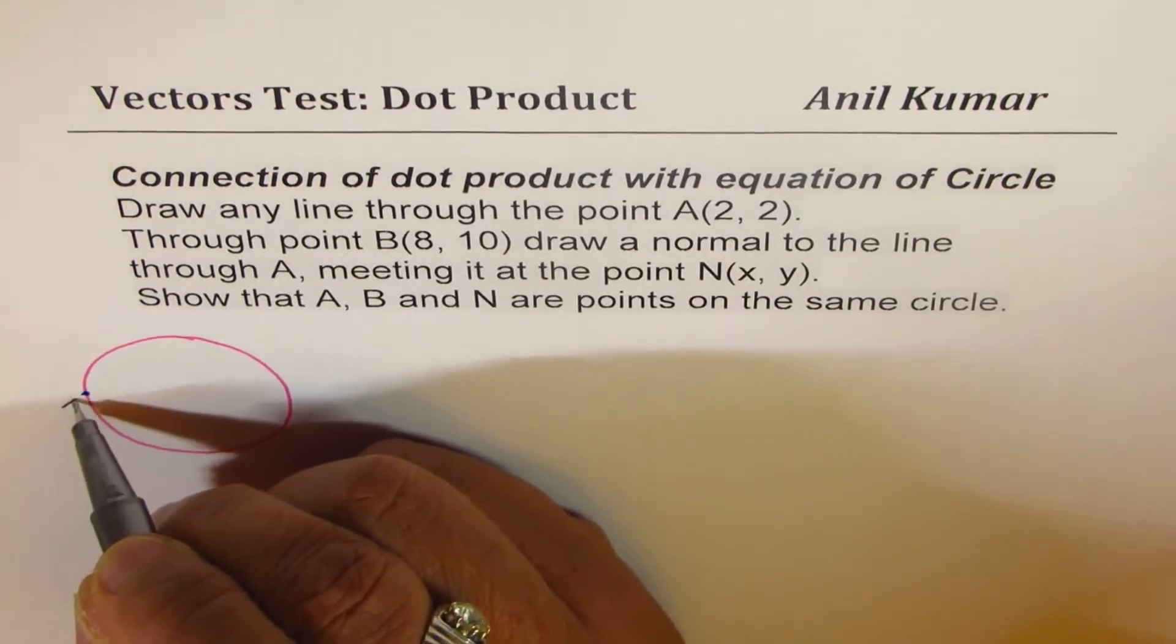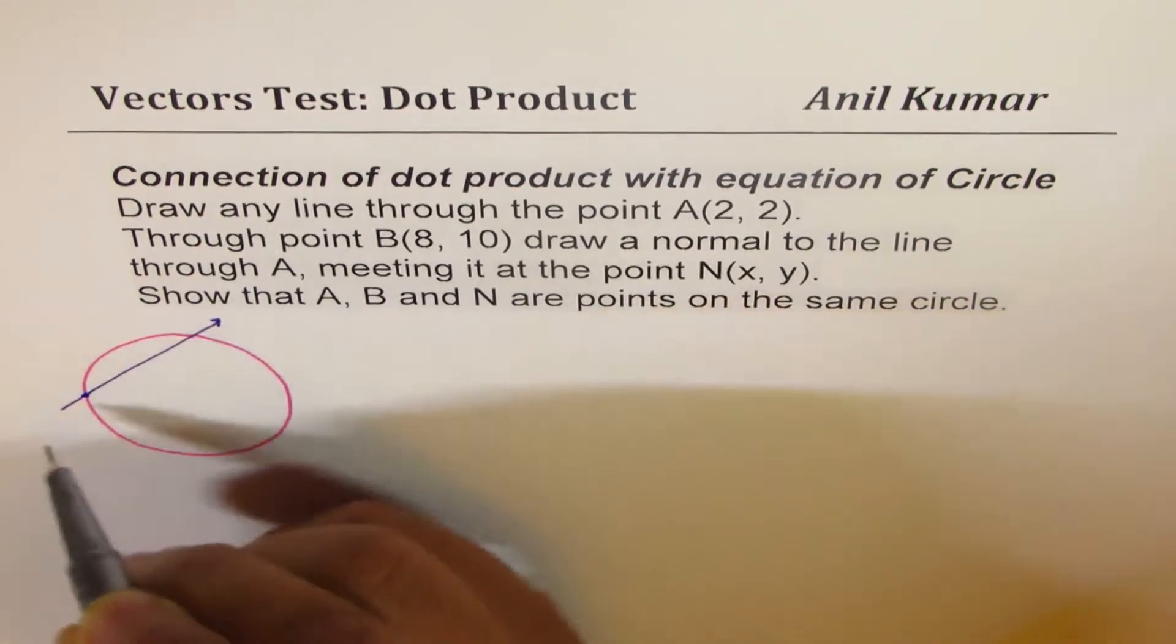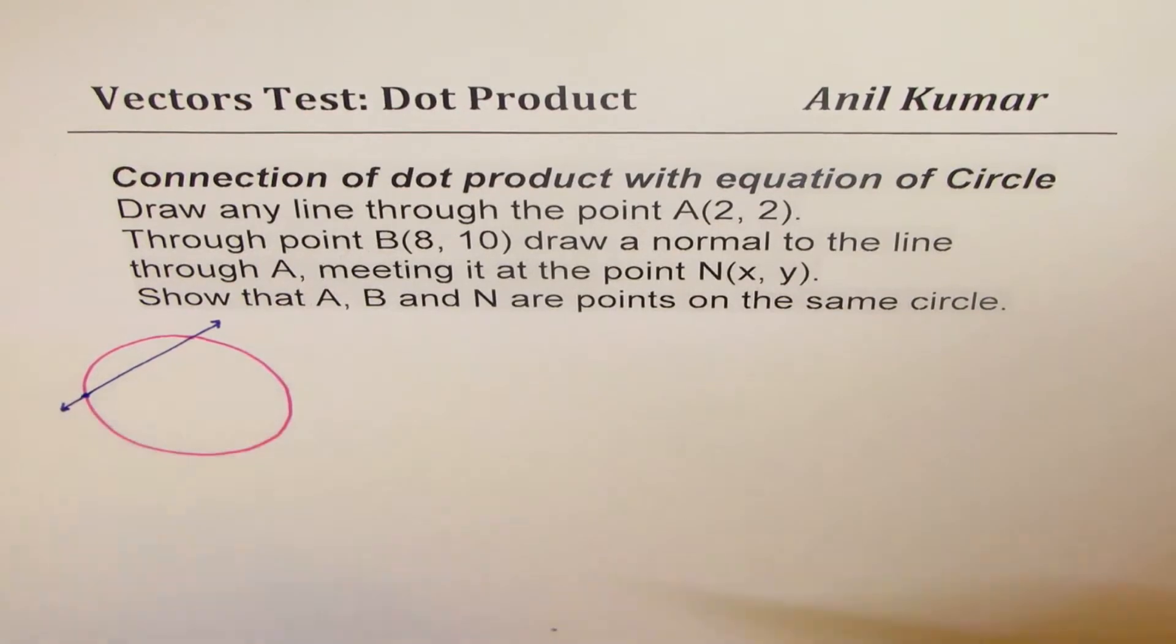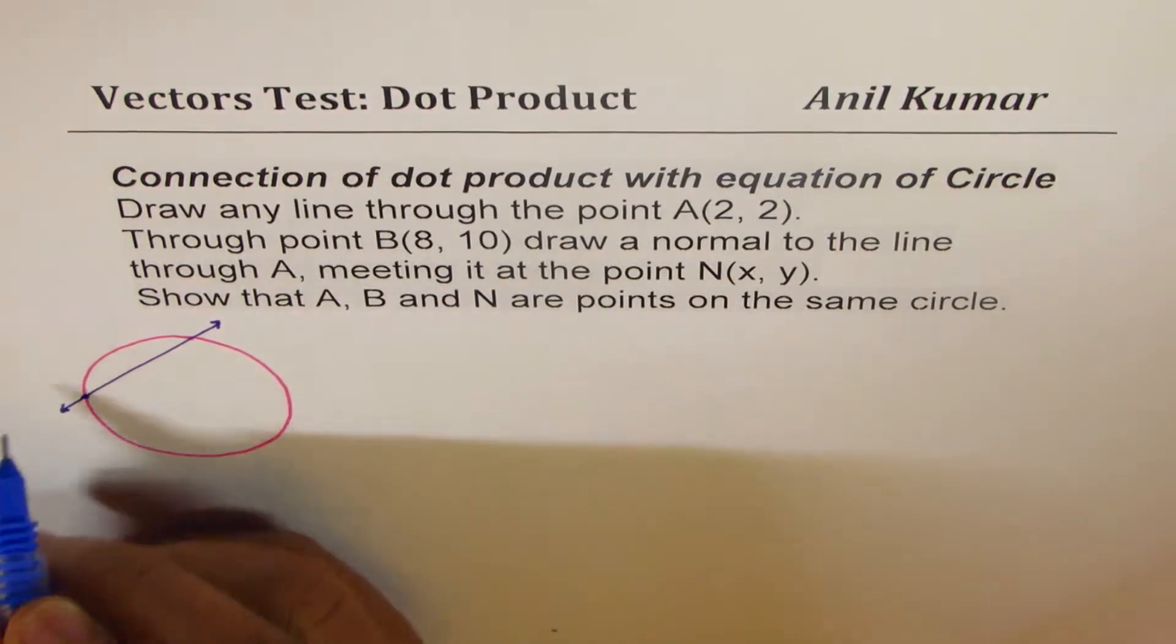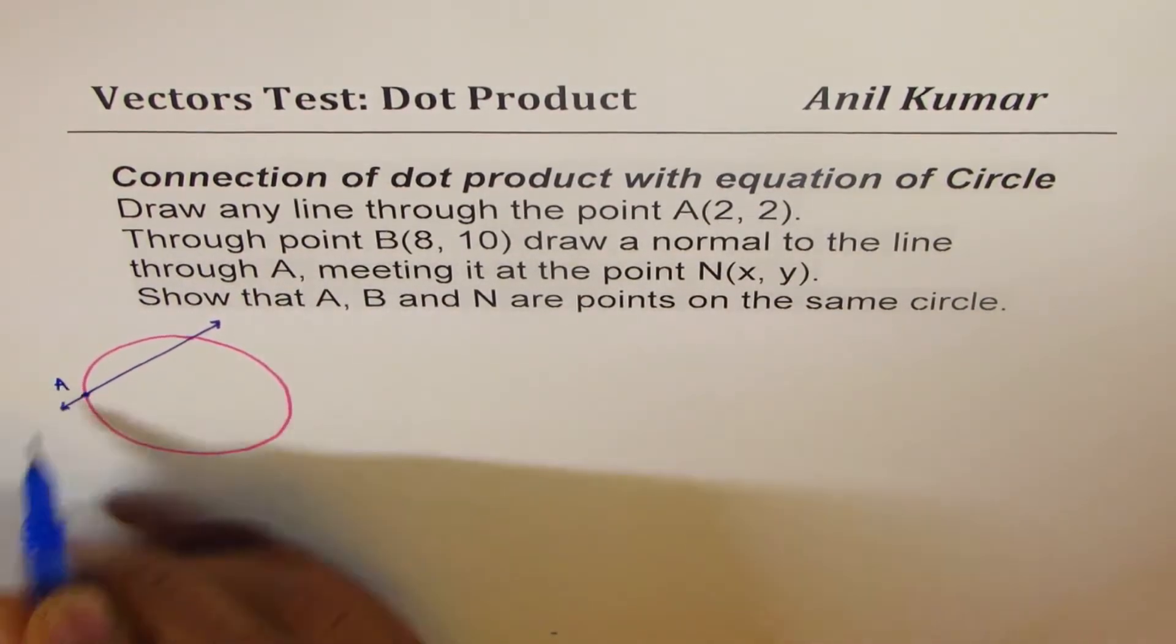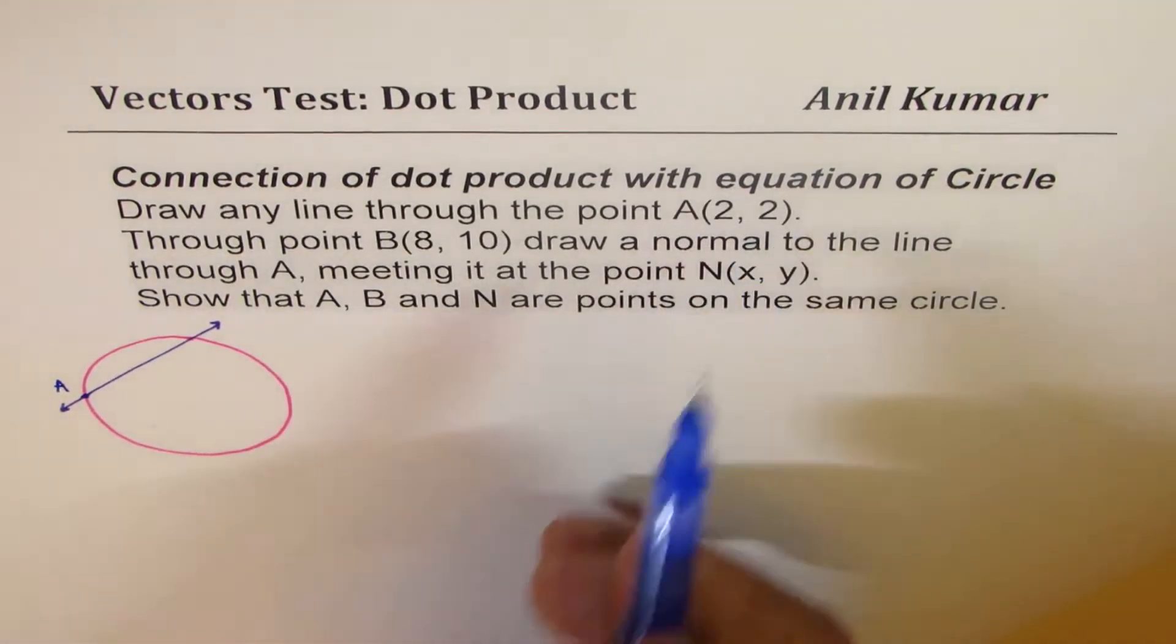So any line could be this. Let's say this is the line which I have drawn through point A. This is my point A, and the coordinates of this point are 2, 2.